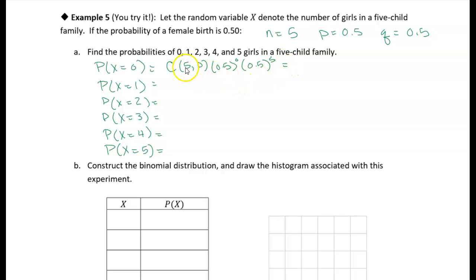Now, one thing to note is that the number of ways to choose zero from five is one. And also, anything to the zero power is also one. So really, all you need to do for this first calculation is put 0.5 to the fifth power into your calculator. And you get 0.03125.